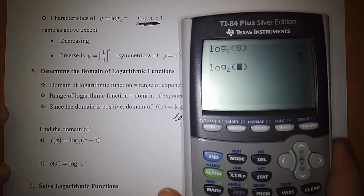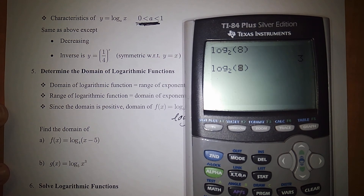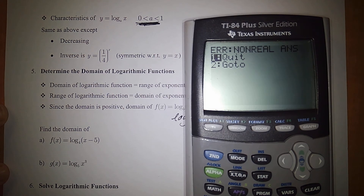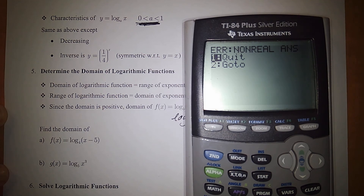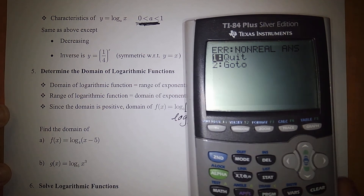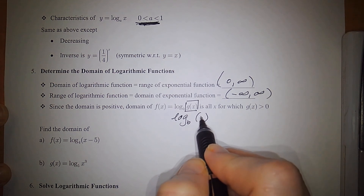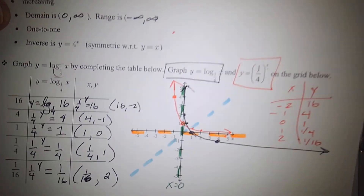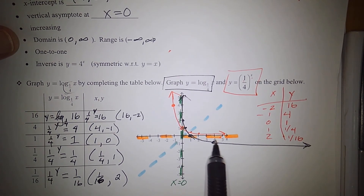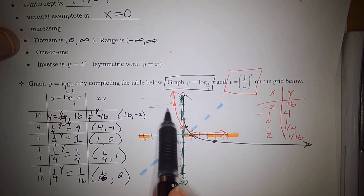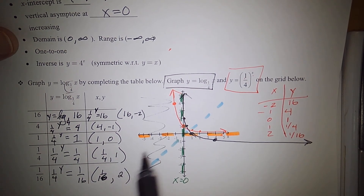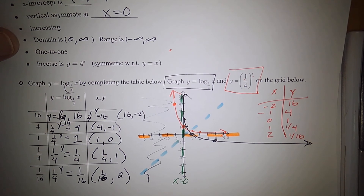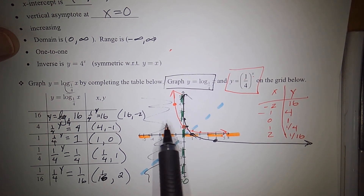So the number inside the logarithm — the value — must always be positive. As seen in our graphs, the logarithmic function never crosses onto the negative x side because x cannot be negative. You can never have a negative value as the argument of a logarithm.